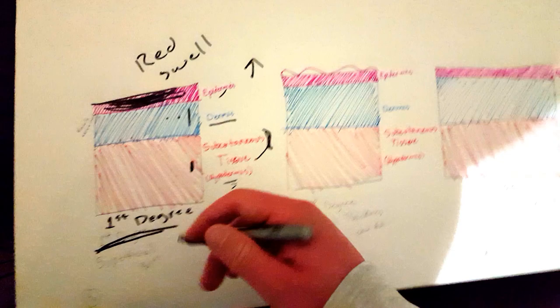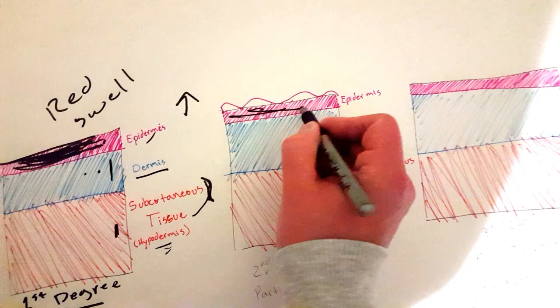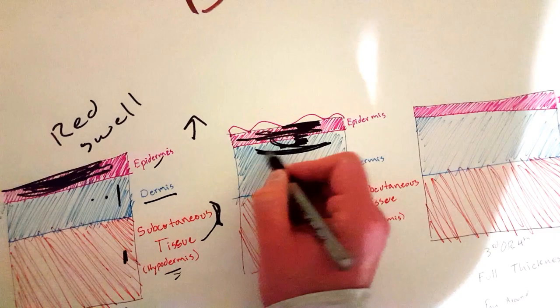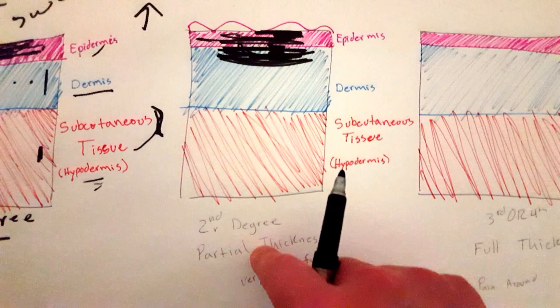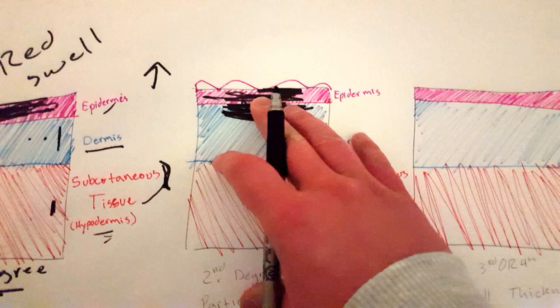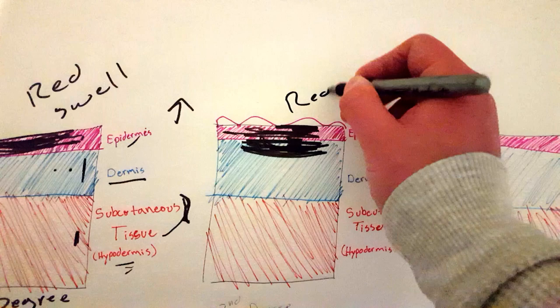When the top layer is completely damaged and then the bottom layer - the dermis layer - is damaged to an extent also, we have what's called a second-degree burn or partial thickness burn. That's what this means. With any kind of burn, but with a second-degree burn you're going to see red, and you're also going to have blisters most of the time.